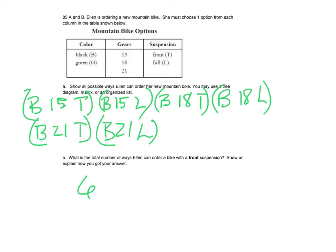Again, this one here is just really about being organized. So to really list all of the possibilities, so here I took the black color and put it with a gear, 15 gears, and then suspension, just front suspension. So I did that with all the black as the color of the bike. And then really, the green is the same. I would just swap out the B for a G. So this was six total. So if I was going to say how many possible are total with both colors of bikes, that would be 12.